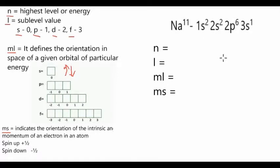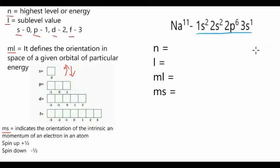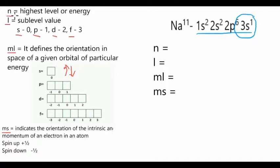For the example, we have sodium, which has an atomic number of 11. To find its quantum numbers, first we construct the electron configuration. Constructing the electron configuration was covered in a previous video. Then we get the end level in the electron configuration.